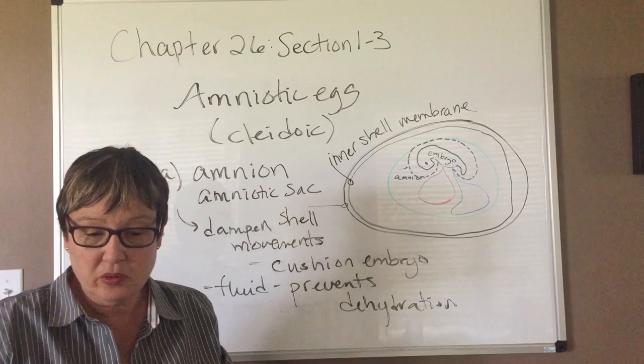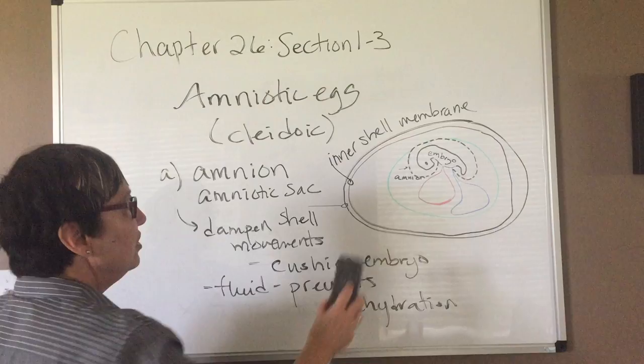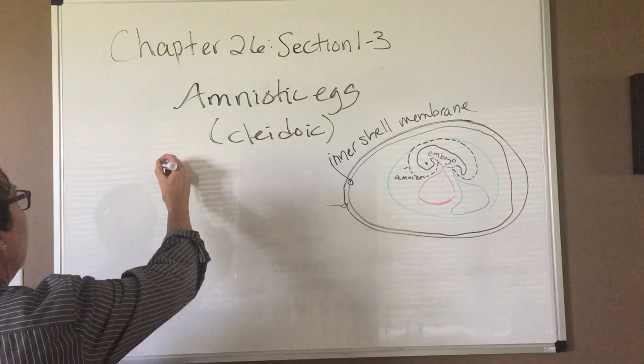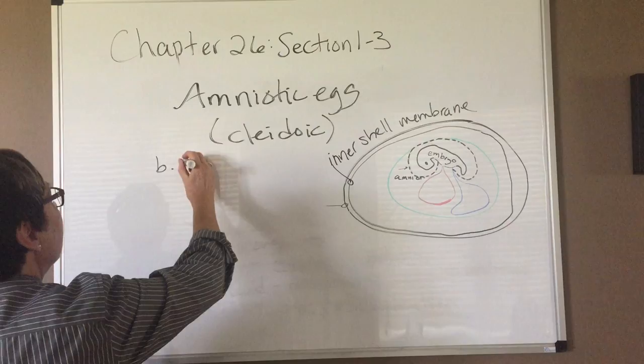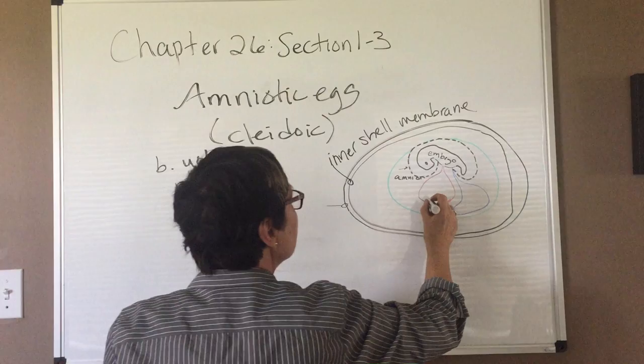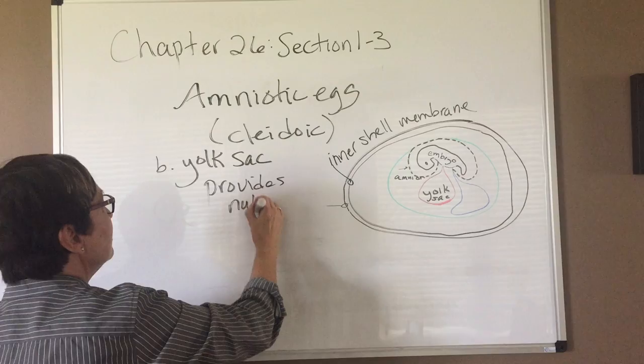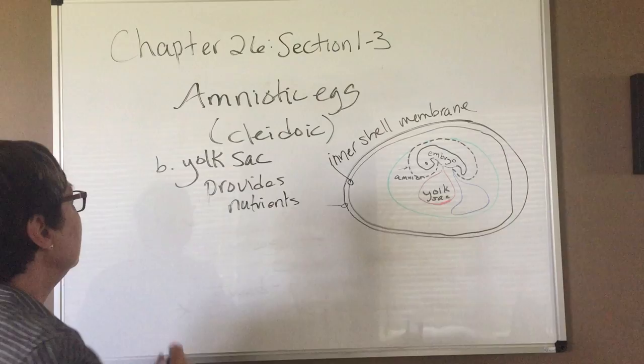Now there's two other membranes that we're going to talk about. Well, actually three, but the next two are shown here and here. So I'm going to erase this. And so now we're going to have B, and we have the yolk sac. So this is shown right here in red. And so this provides nutrients to the embryo during development.